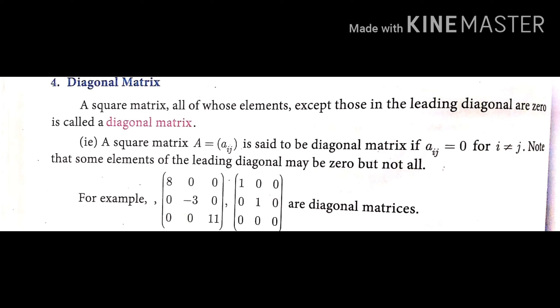The fourth type is diagonal matrix. A square matrix in which all elements except those in the leading diagonal are zero is called a diagonal matrix. Only the diagonal positions contain numbers; all other elements are zero.